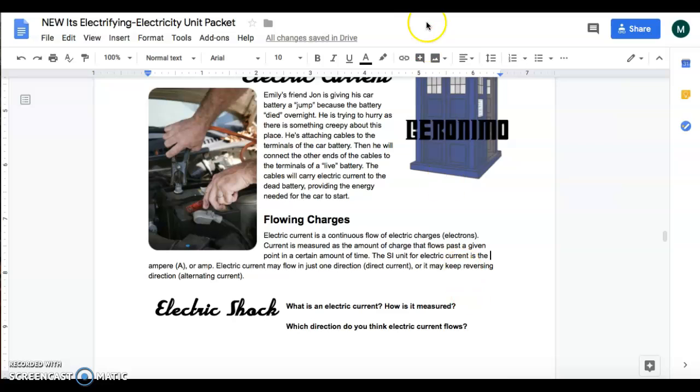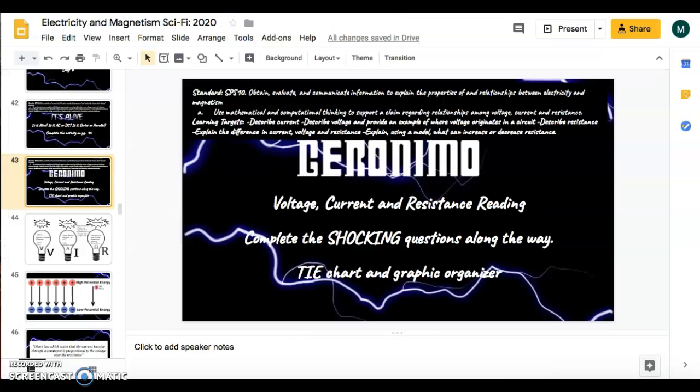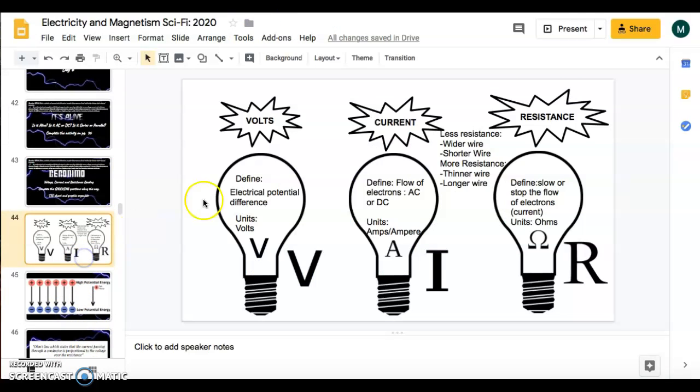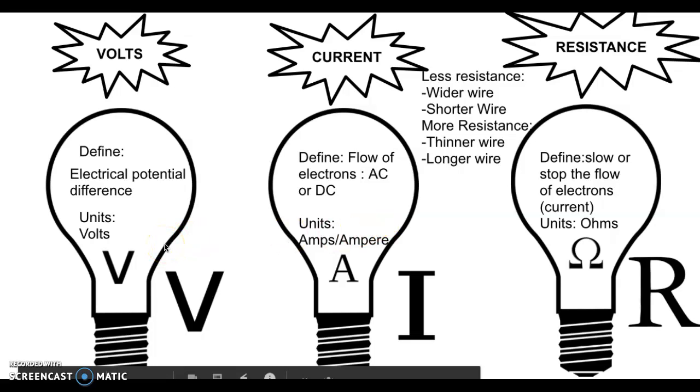Now the one thing that we haven't talked about is how current is measured. We've briefly mentioned it in our PhET simulation, but as you can see here in my nice little graphic organizer, current is the flow of electrons, AC and DC, but its units are measured in amps or amperes. Now the unit measure is A.